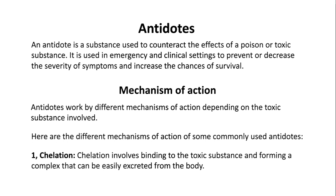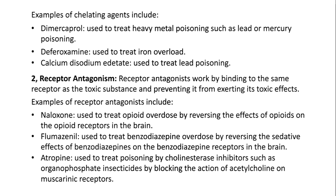Chelation involves binding to the toxic substance and forming a complex that can be easily excreted from the body. Examples of chelating agents include Dimercaprol, used to treat heavy metal poisoning such as lead or mercury poisoning; Deferoxamine, used to treat iron overload; and Calcium disodium editate, used to treat lead poisoning.